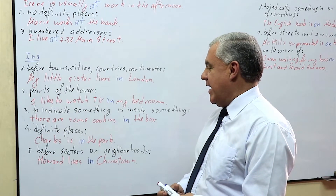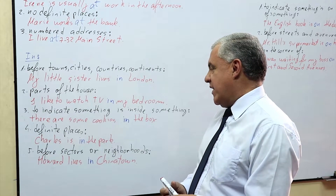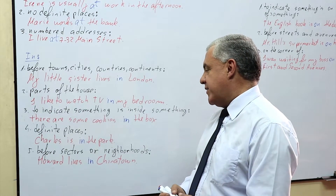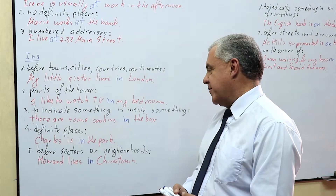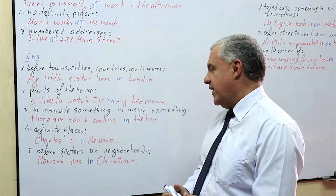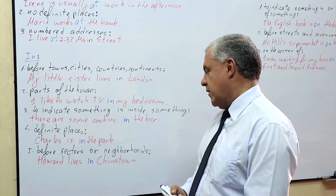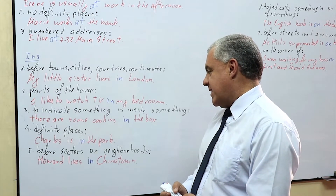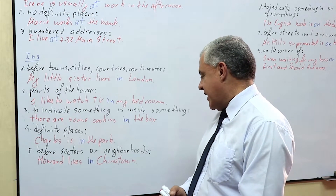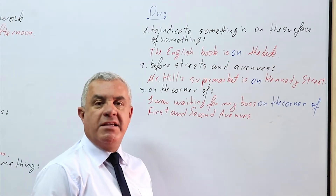Number four: 'in' is used with definite places — for example, Charles is in the park. Number five: 'in' is used before sectors or neighborhoods — for example, Howard lives in Chinatown.